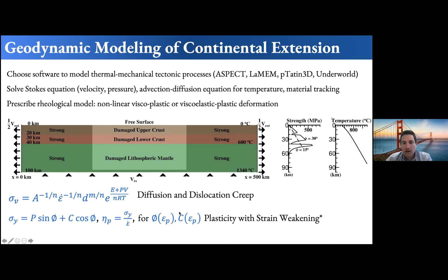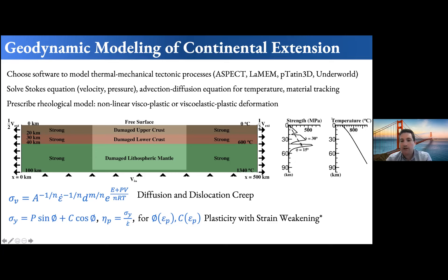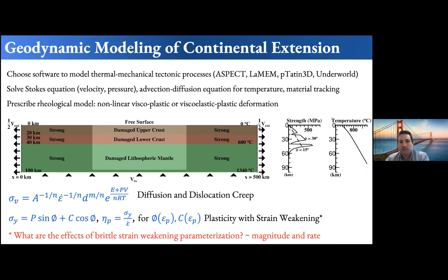With a viscosity rescaling method you get a plastic viscosity representing the low strength within brittle shear zones. On this strength-profile curve, two profiles are shown: one for a friction angle of 30 degrees and one for 15 degrees. In these models you need weakening of the friction — and in some cases cohesion — over time in order to localize deformation effectively. This is called plasticity with strain weakening. The rest of the talk focuses on the effect of this strain weakening parameterization — specifically its magnitude and rate — on both single and multi-phase rifting.